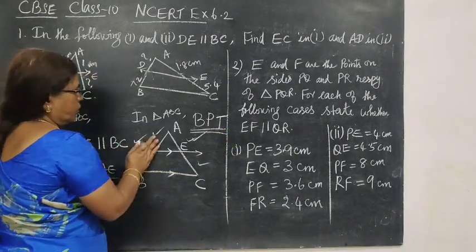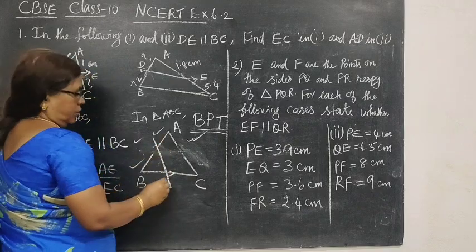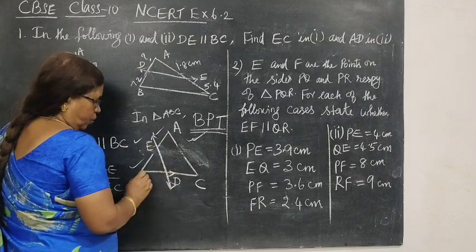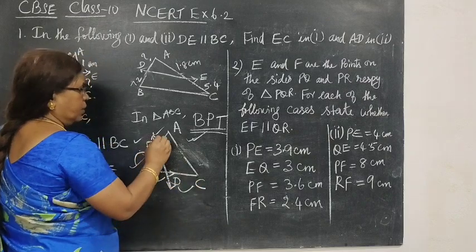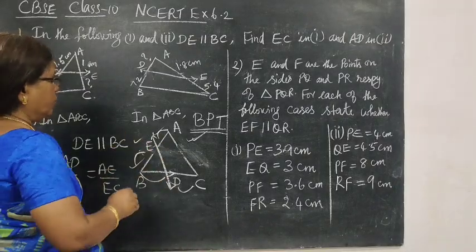We can draw in this way also. You can draw like this. BD by DC equal to BE by EC. It divides the other two sides in the same ratio.